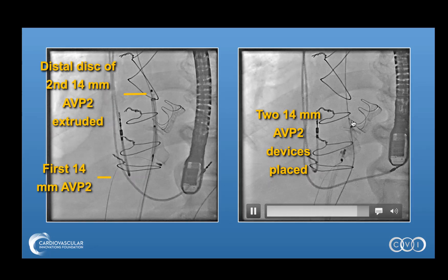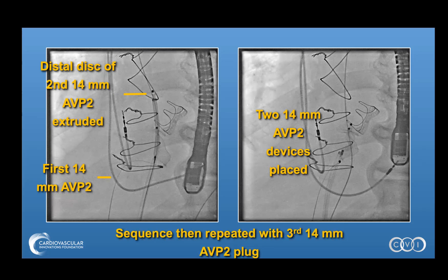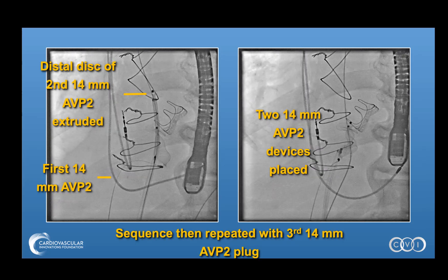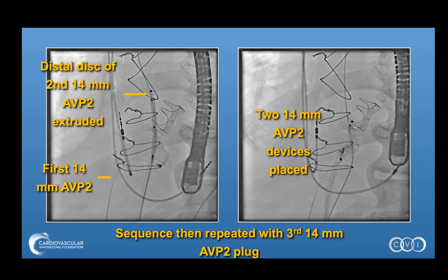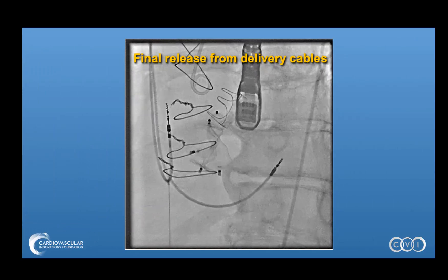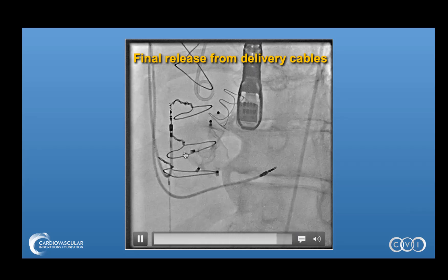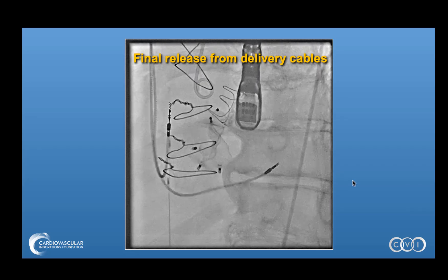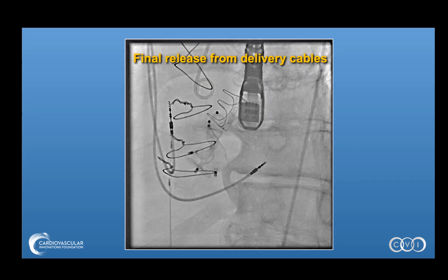We then place two AVP2s right next to each other, and the wire is still left behind as a rail in case we need to do an additional device or exchange the current devices for larger ones. We then repeat the sequence with the third 14 millimeter plug, going over that same wire exterior to the two delivery cables, and place a third AVP2 device. With three plugs placed across the fistula, the regurgitation is markedly improved and all devices are then released.